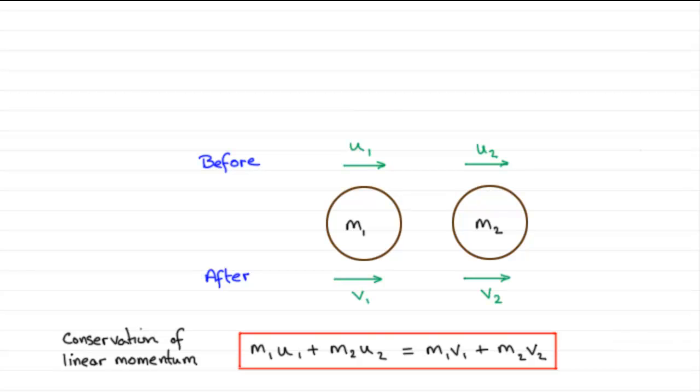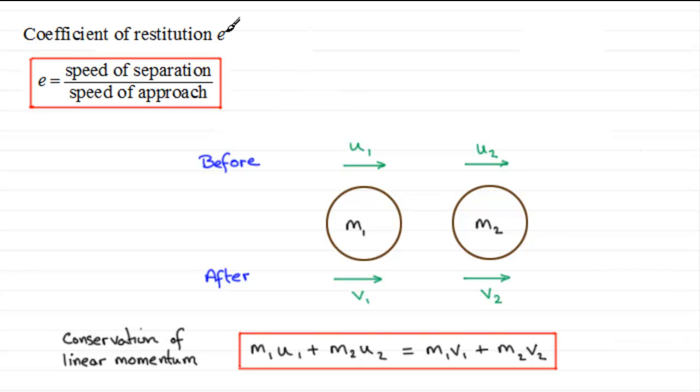Now the coefficient of restitution, given by the letter e, is a value that compares the speed of separation of the two particles with the speed of approach of the two particles. Both these quantities are always positive.